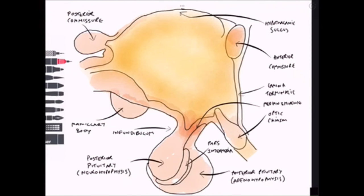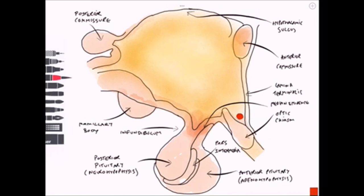The hypothalamus itself is really just a collection of nuclei or groups of nuclei. We're going to run through those now, mentioning some very briefly and elaborating on a few others. First of all, we have the SCN — the suprachiasmatic nucleus.